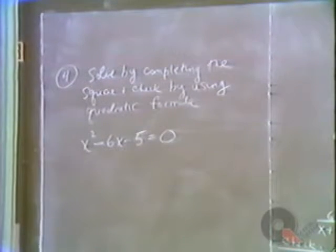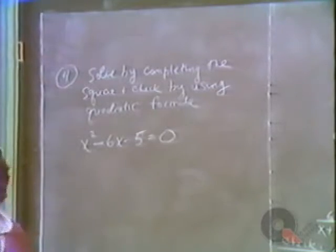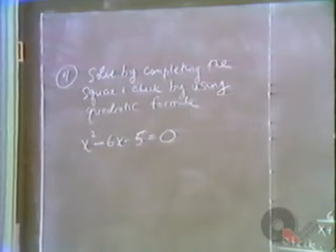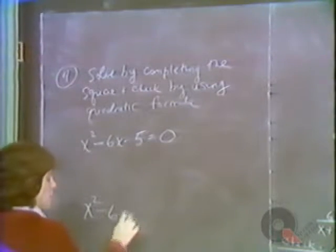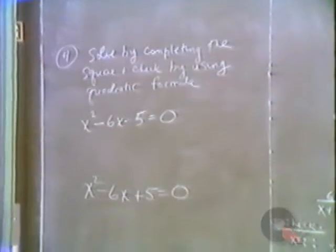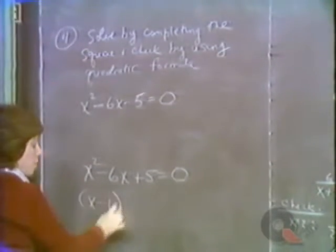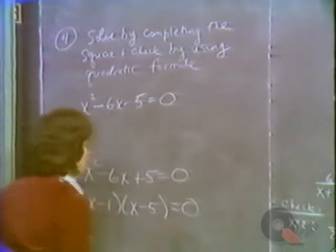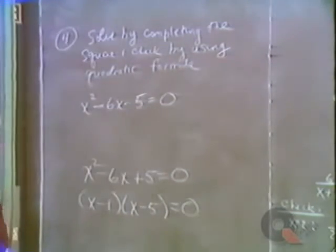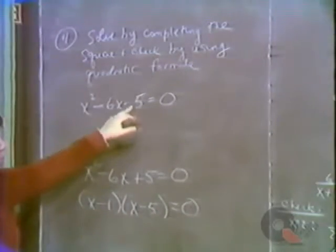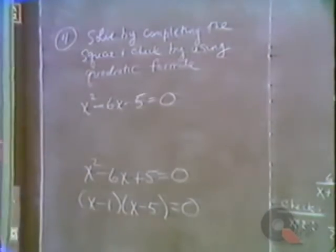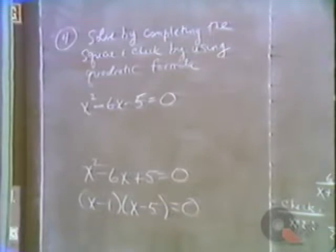The example is x squared minus 6x minus 5 equals zero. You can convince yourself this doesn't factor: we'd need two numbers that multiply to minus 5 and add to minus 6, and there are no integers that do that. If it had been x squared minus 6x plus 5, we could factor — two numbers multiplying to plus 5 and adding to minus 6 work — but with minus 5 we cannot.